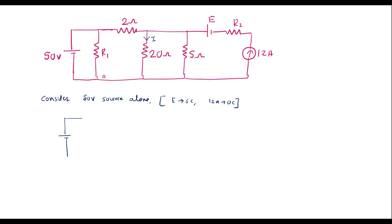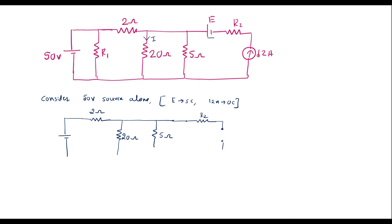In that case, we can neglect R1, so ignore this R1 resistor. We have a 2 ohm resistor connected directly, then a 20 ohm resistor, and a 5 ohm resistor. The voltage source E is short circuited, and there is the R2 resistor, with the current source side open circuited. As this circuit is open circuit here, no current flows in the R2 resistor.